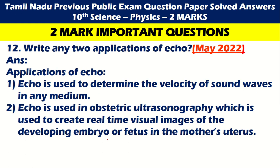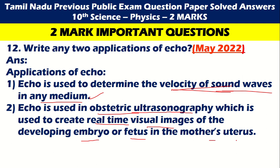Next: Write any two applications of echo. First, echo is used to determine the velocity of sound waves in any medium. Second, echo is used in obstetric ultrasonography, which is used to create real-time visual images of the developing embryo, fetus, and mother's uterus.